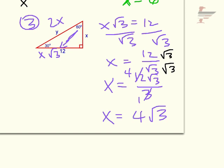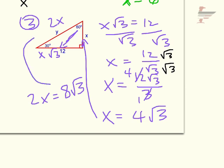And if x is 4 root 3 that's going to be that side. To find the hypotenuse which is 2x, I would double that. And you only double the 4 so you would get 2x is 8 root 3. And that would be the hypotenuse side.